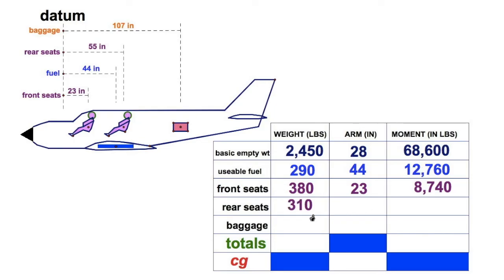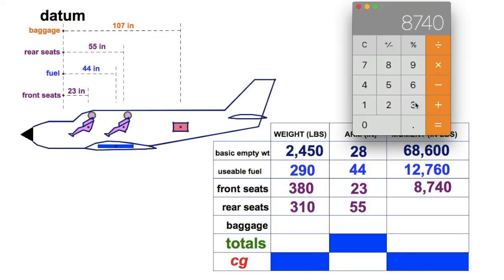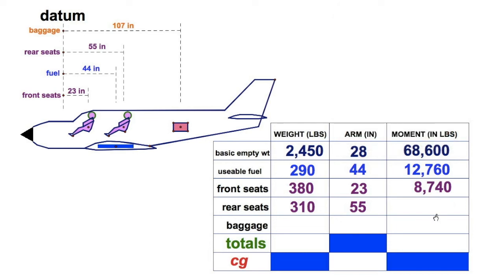Now you're going to take these rear passengers, I'm going to say 310. We're going to read off the chart, 55 inches after the datum. Let's combine it all. 310 times 55 equals 17,050. Put that one down there.